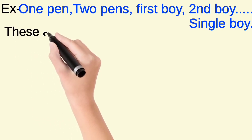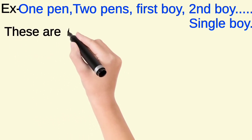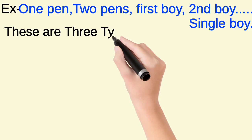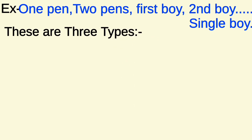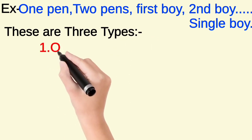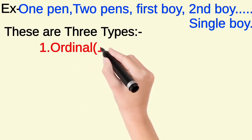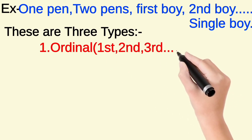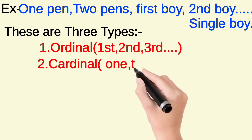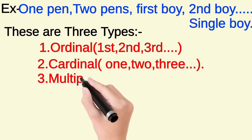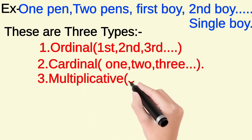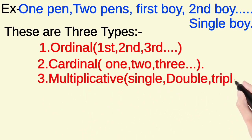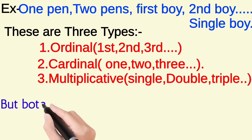The words one, two, first, second, single are called numerical adjectives. There are three types of numerical adjectives: ordinal — first, second, third; cardinal — one, two, three, four, etc.; and multiplicative — single, double, triple, etc.